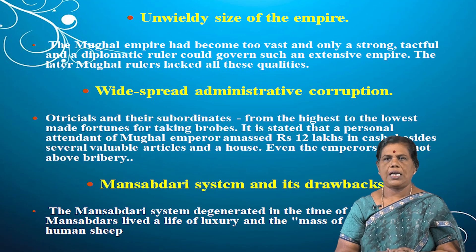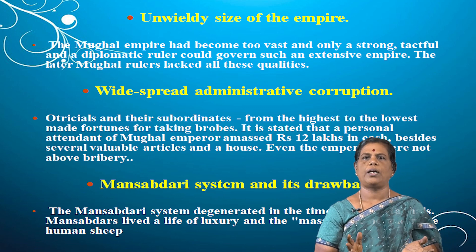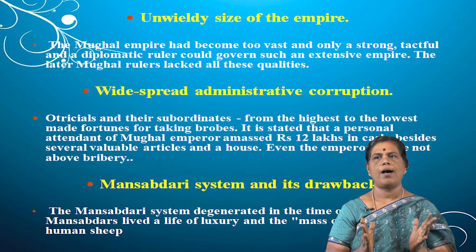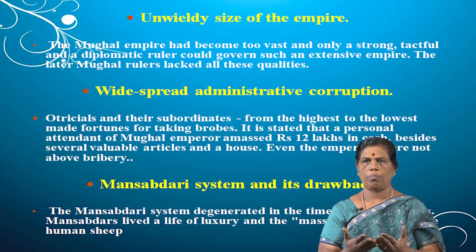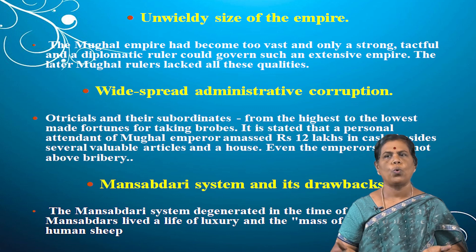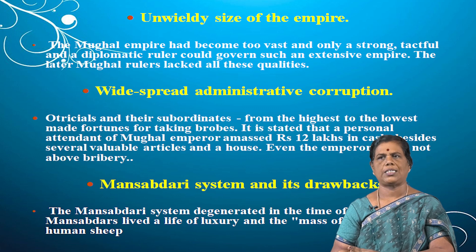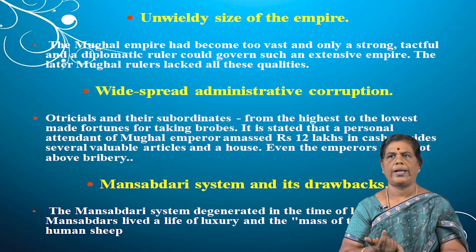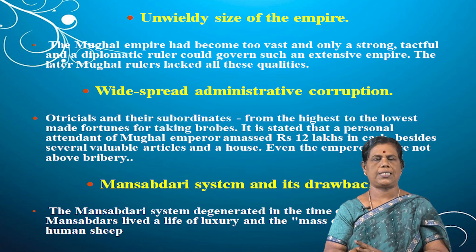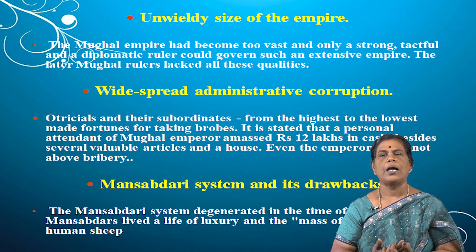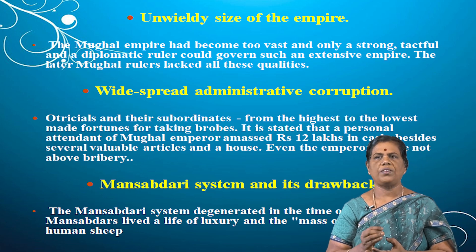The unwieldy size of the empire was also a cause. Akbar and Aurangzeb ruled vast empires, but such an extensive empire could only be governed by a strong, tactful, and diplomatic ruler. The later Mughal rulers lacked all these qualities.